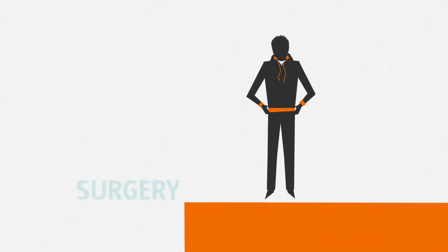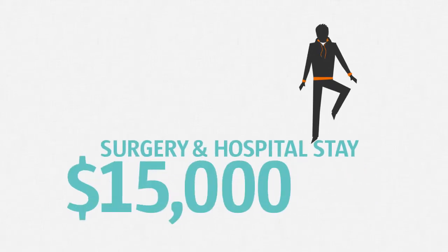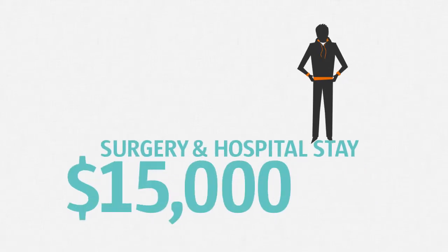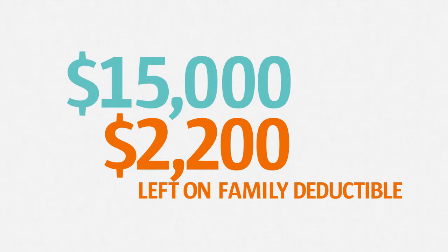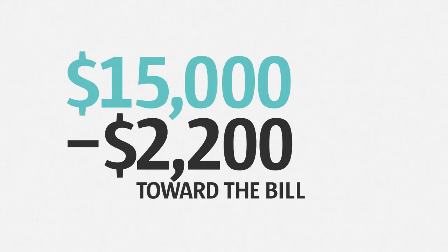The total cost of John's surgery and hospital stay is $15,000. Because John still has $2,200 left before meeting his family deductible, he pays the first $2,200 of the bill.